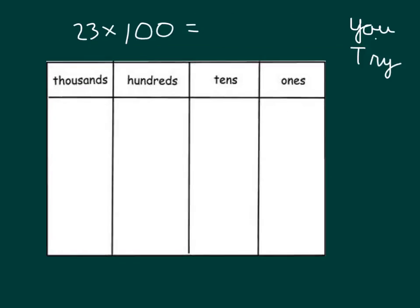You go ahead and try this one here, 23 times 100. Set it up. And then what will help you when it is that we get to the multiplying by 100, because that will look a little bit different than just multiplying by 10. Pause that video to model 23 in that place value chart.